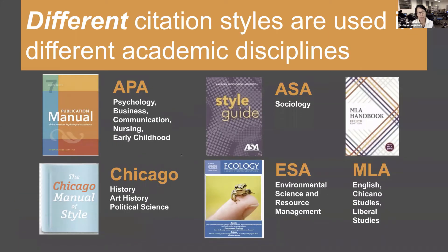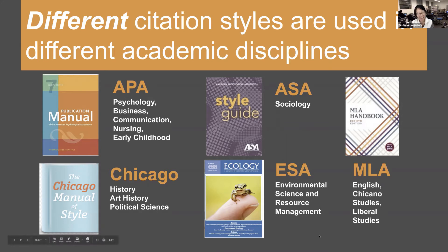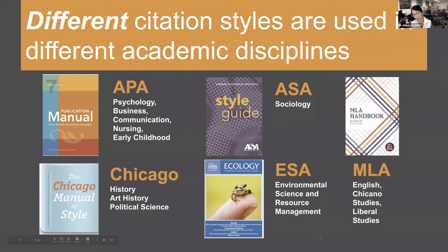Here are all the different citation styles used in different academic disciplines here at CI. APA is primarily used by psychology, business communication, nursing, and early childhood. ASA is used only by sociology. MLA is primarily used by English, but also Chicana studies, liberal studies, and others in the humanities. ESA is used by Environmental Science and Resource Management — that's ESRM. Chicago style is used primarily by history, art history, and political science.